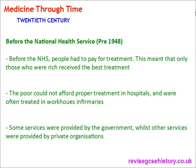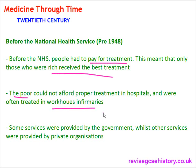Before the National Health Service — which was introduced in 1948 — people had to pay for treatment, whereas today it's all free and NHS-funded. This meant that only those who were rich received the best treatment. The poor could not afford proper treatment in hospitals and were often treated in workhouse infirmaries. Some services were provided by the government whilst others were provided by private organisations, and the quality of treatment often varied.